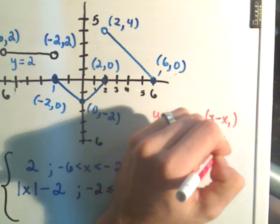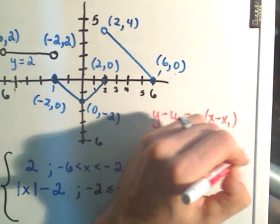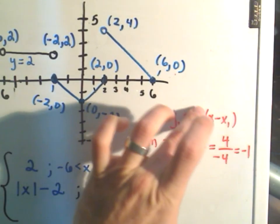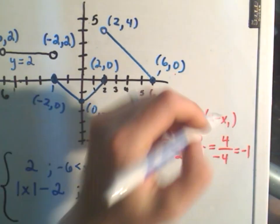So I get 4 over -4, which says the slope of my line is -1. Okay, so I'm going to plug in that slope of -1.